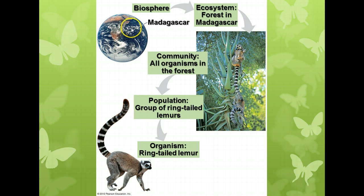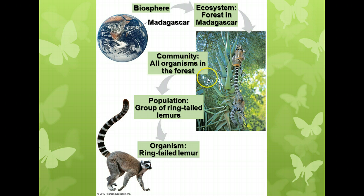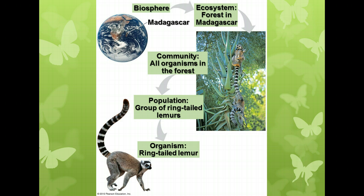We're going to focus on an ecosystem in Madagascar, which is an island off the east coast of Africa. It has lots of unique things, including lemurs, which is the focus of this particular diagram. A community in an ecosystem is all the organisms that live in that forest, and the ecosystem includes the non-living things like dirt and water.